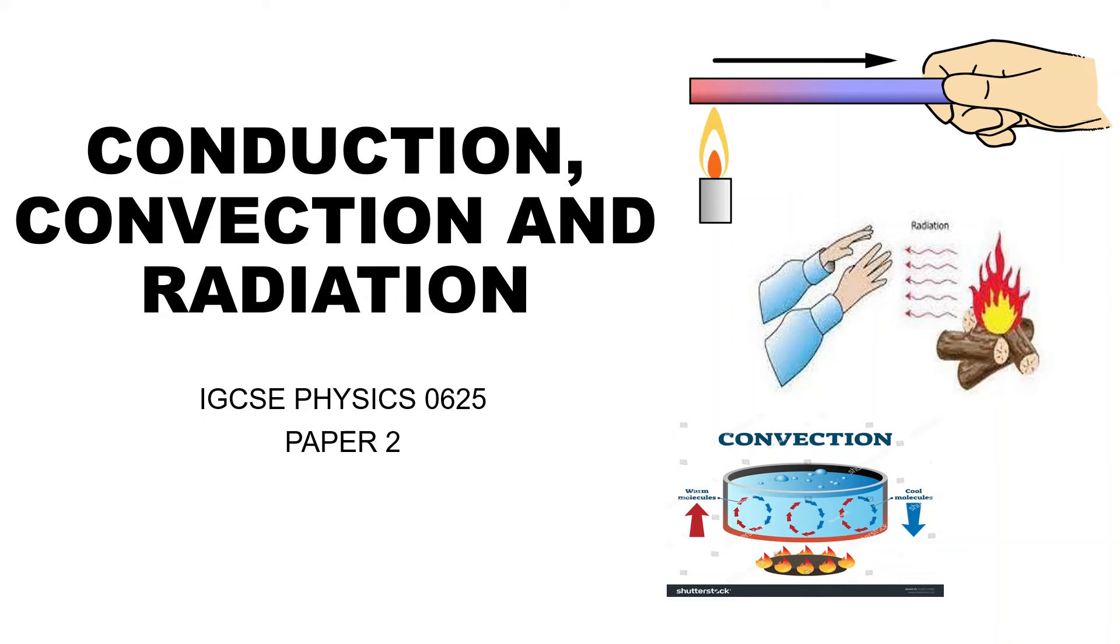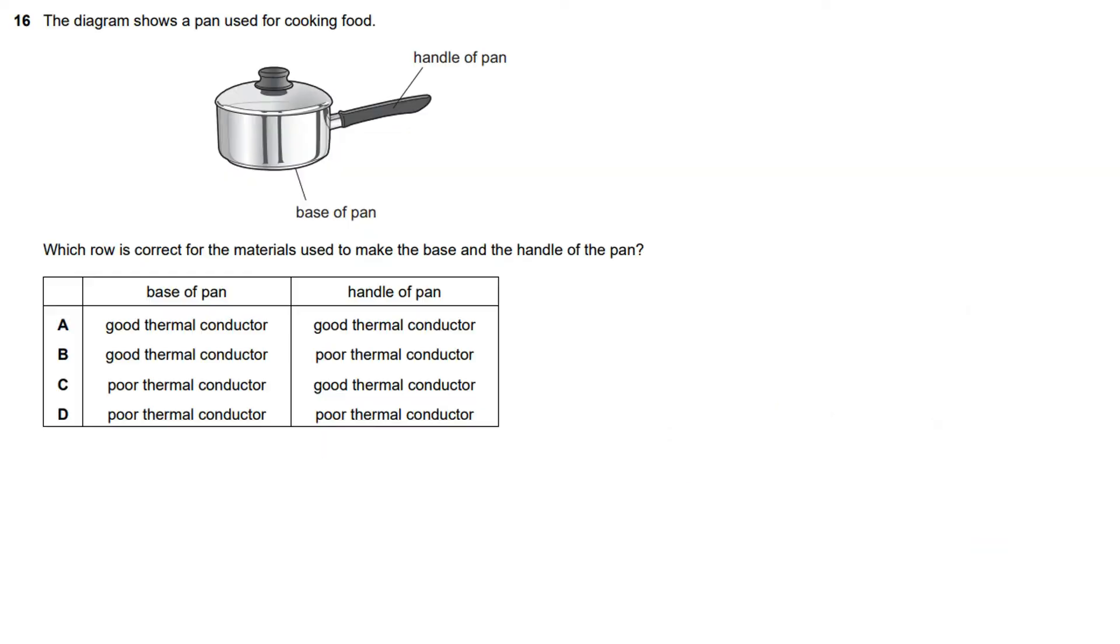Welcome back to the channel. Today we'll be discussing questions from IGCSE Physics 0625 Paper 2, which is an MCQ-based paper. The topic is conduction, convection, and radiation. We'll try to solve one question from each of the three subtopics. Let's move on.